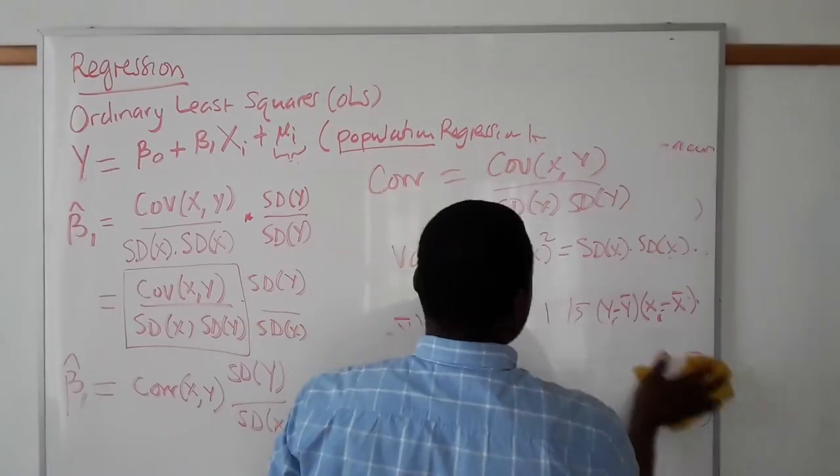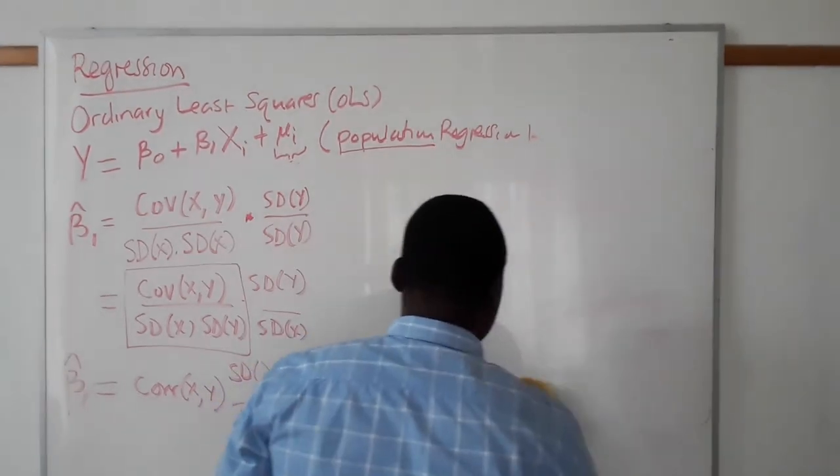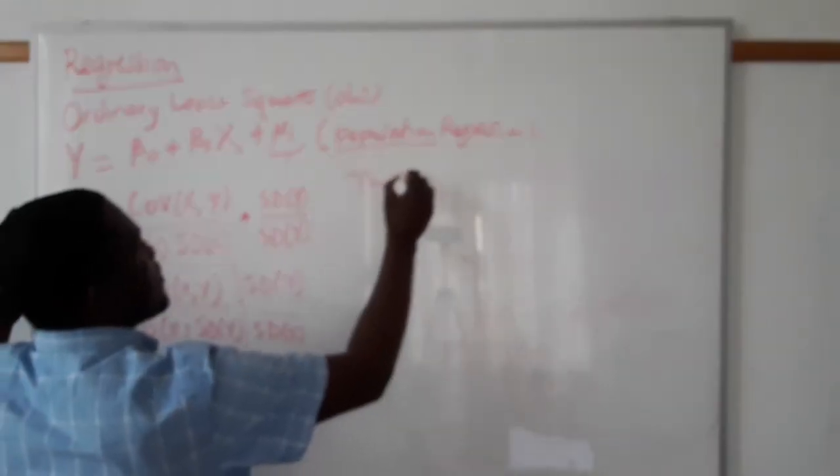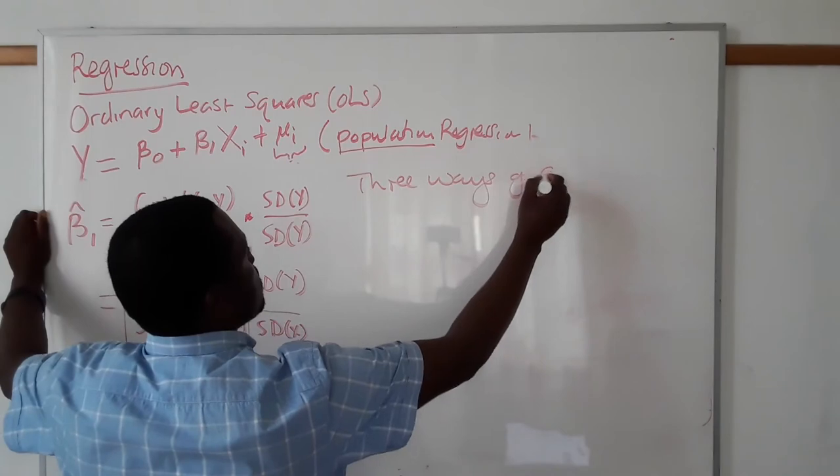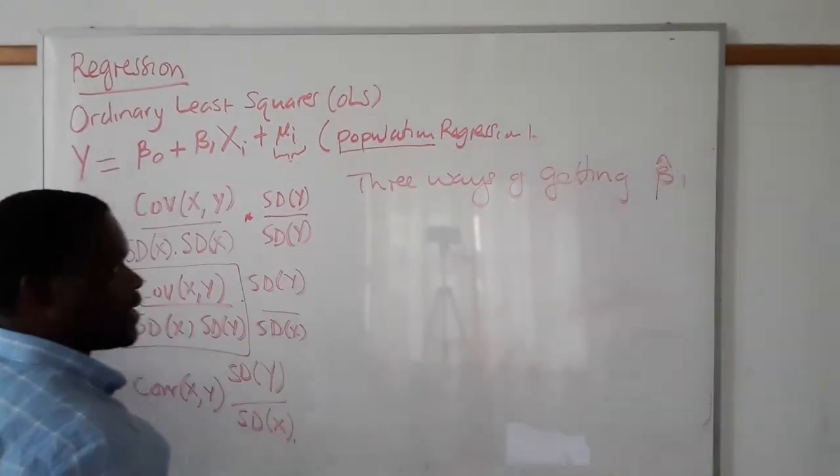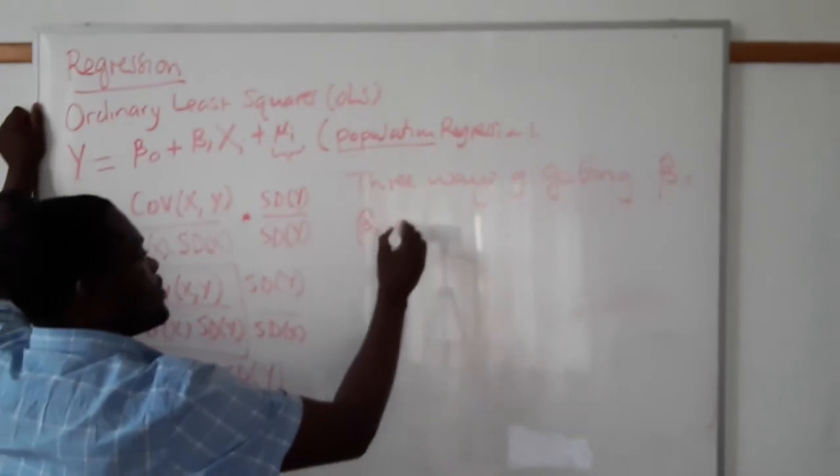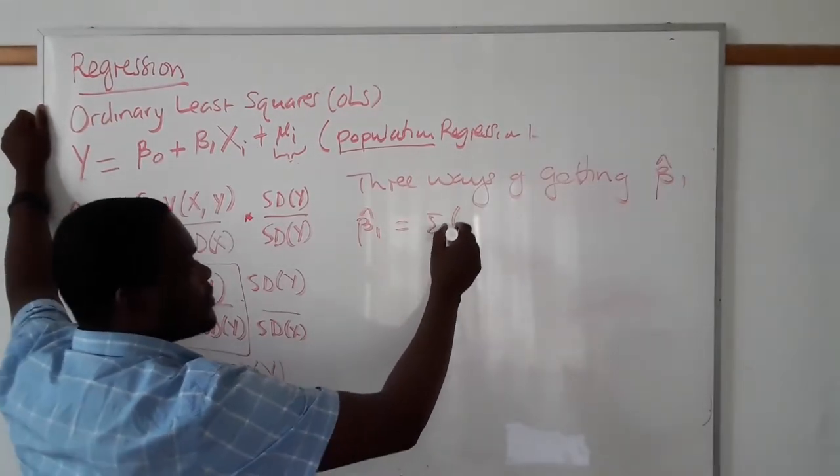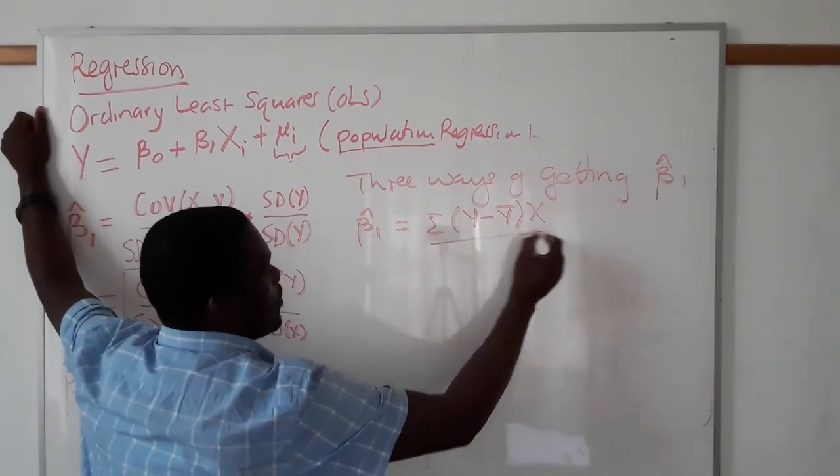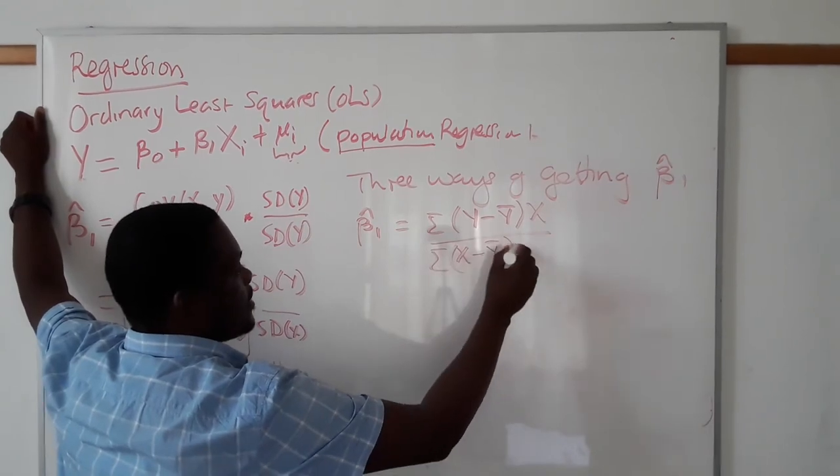Now, put differently then, it means we can, or not put differently, but rather by way of conclusion, we can say that there are three ways of getting β₁. And this ranges from our β₁ being equal to the sum of (Y minus Y̅)(X minus X̅) over the sum of (X minus X̅) times X.